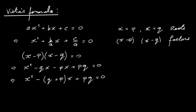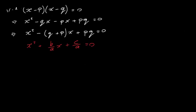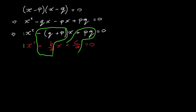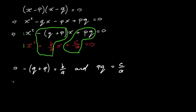Looking at our original equation x squared plus b over ax plus c over a equals zero and equating coefficients, we find that minus(q plus p) equals b over a, so q plus p equals minus b over a. And pq equals c over a.